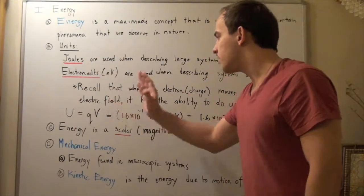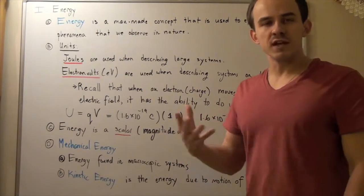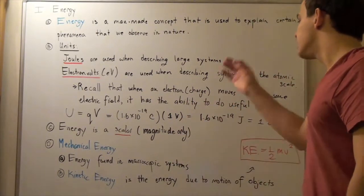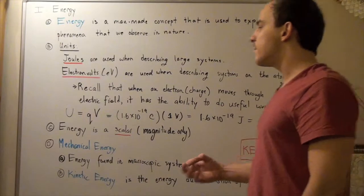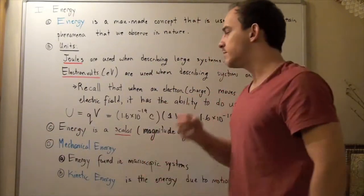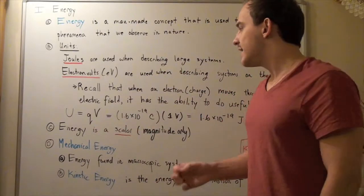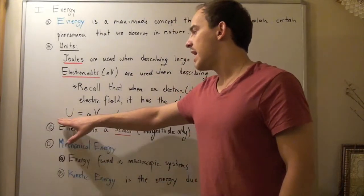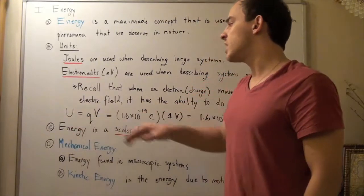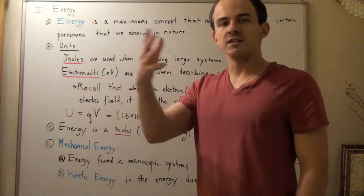Now, recall that whenever an electron, a moving charge, moves through an electric field, it has the ability to do useful work. And the amount of energy that a moving charge has when it moves through some voltage, through some electric potential, is given by the following formula. Our energy equals Q times V, where V is simply voltage given in electric field times distance.